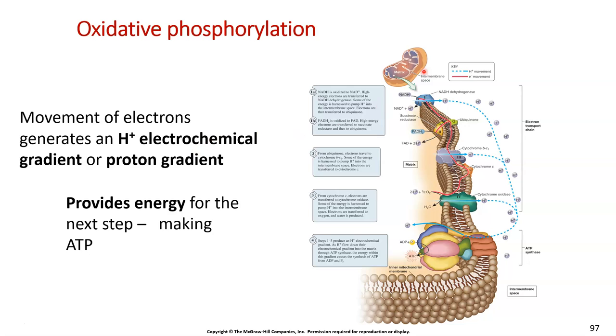We are essentially creating this high concentration of hydrogens. That high concentration of hydrogens has a term or a name, which is the hydrogen electrochemical gradient or proton gradient. And this is going to provide energy for that next step. So just to tell you the terminology for that high concentration of hydrogens are these two terms here in bold.